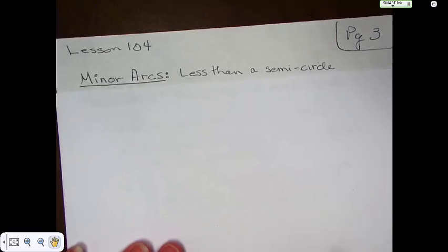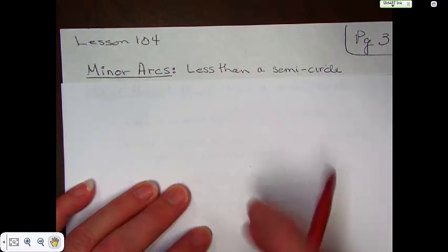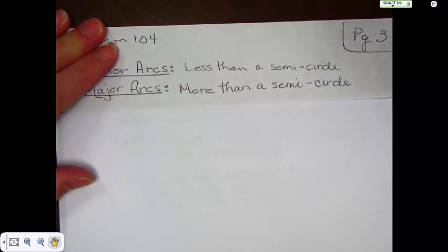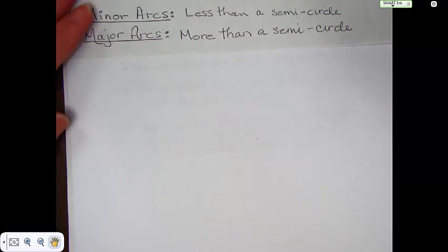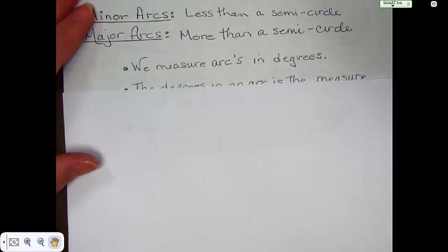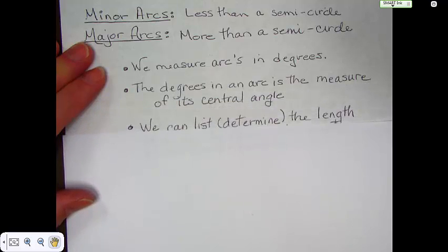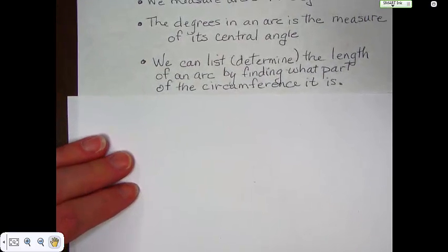Just a couple of vocabularies. Minor arcs are less than a semicircle. So, in other words, it would be less than half the circle. That's a minor arc. Major arc is more than a semicircle, but not the whole entire circle. We measure arcs in degrees. The degrees in an arc is the measure of its central angle. We can list or determine the length of an arc by finding what part of the circumference it is.